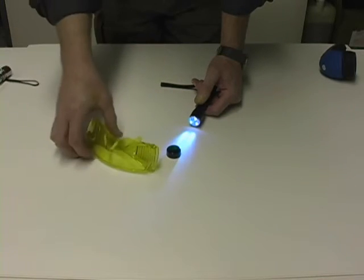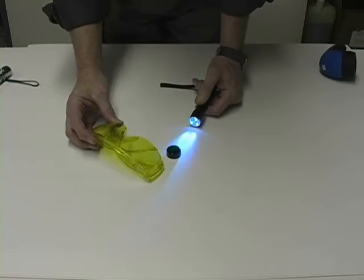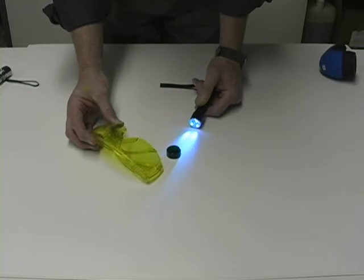The glasses carry out two functions, one they act as a protective goggle for the operator, but the other thing is that they actually filter the light around the vehicle so that when you are actually looking for the dye, it enhances the fluoresce.